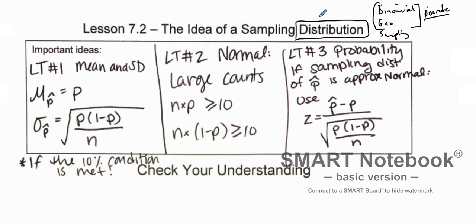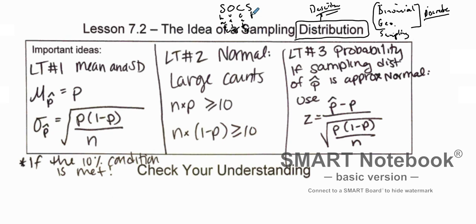When you talk about distributions, we can identify and picture these distributions in several different ways. One thing when we talk about distributions is we want to describe them. If you're in AP Stats, you've probably heard of SOCS — Shape, Outliers, Center, and Spread. Now when we talk about SOCS in the context of a sampling distribution...